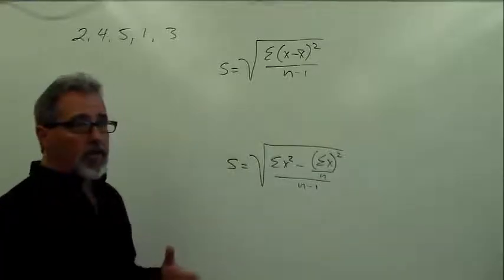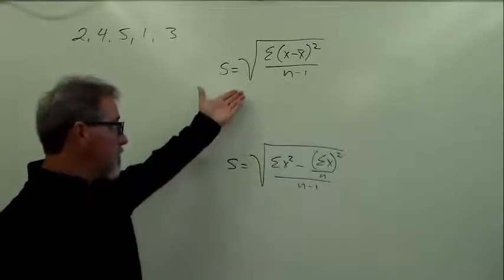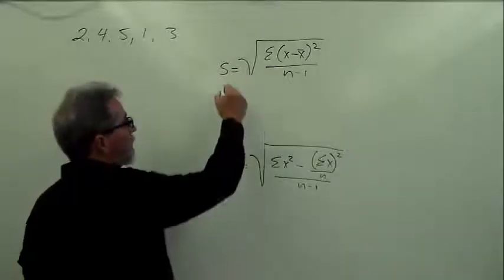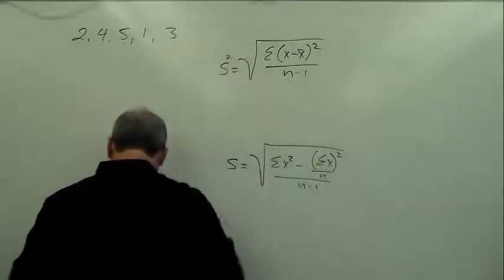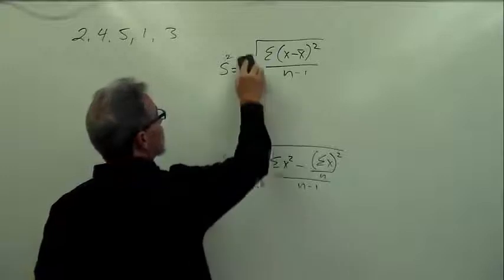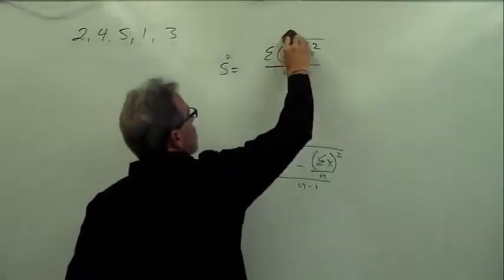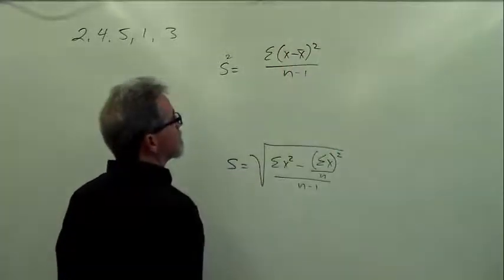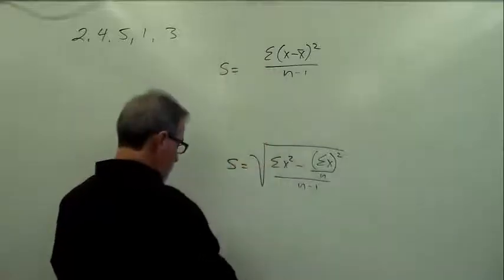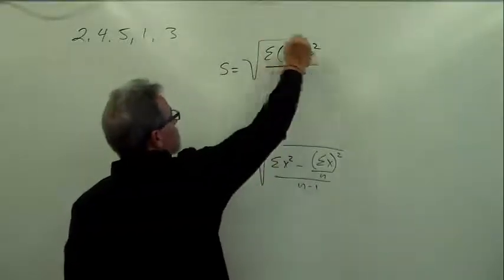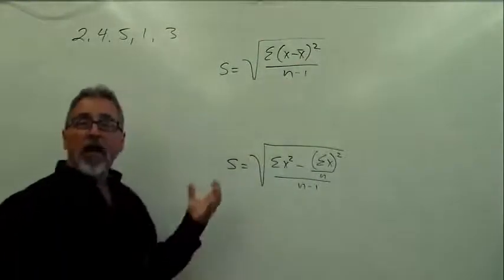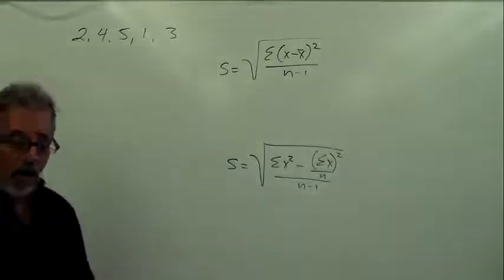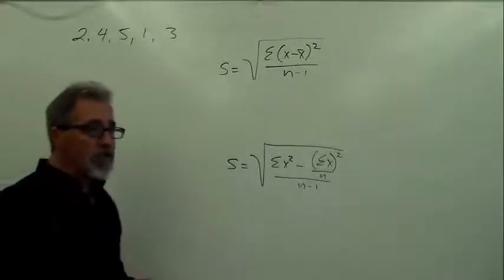Remember, in the notes I pointed out the difference between a variance and standard deviation. It's just this square root. If it's variance, you just get rid of this square root right here. That's the exact same formula. That's the variance. If you want standard deviation, you square root it. I'm just going to calculate the standard deviations, but on our way, we're going to get variance. Let's do it for each of these formulas.